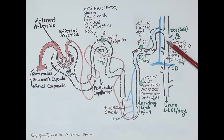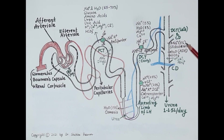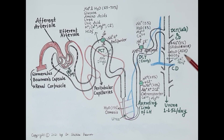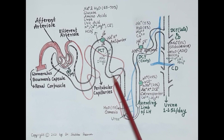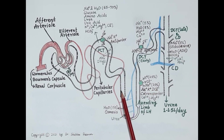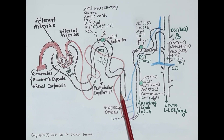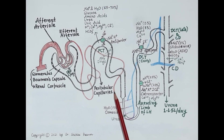In the late distal convoluted tubule and collecting duct, around 3 percent of sodium is absorbed along with water. Absorption of water is tightly regulated by anti-diuretic hormone in the collecting duct, whereas reabsorption of sodium is regulated by aldosterone. Sodium along with water moves into the peritubular capillaries, reaching the blood circulation.